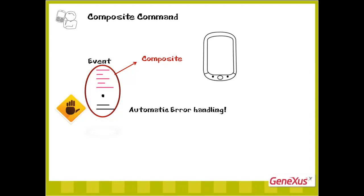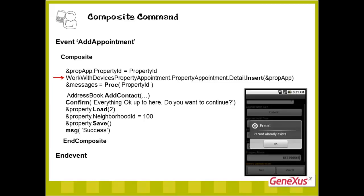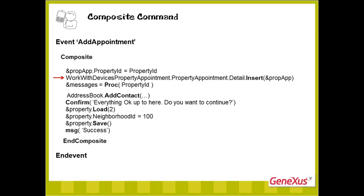The composite command is implemented only in smart devices, where it is mandatory every time that more than one invocation is made within the same event. In this example, we can see a series of commands, some of which are invocations. When the first invocation fails — due to a duplicated key, for example — the error message is displayed and the execution stops. The following invocation is not executed, nor is the procedure or anything following. When this is not the case, the invocation will indeed take place.